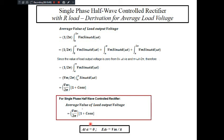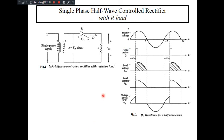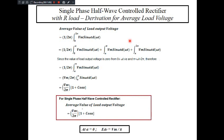Now let us see how the average load voltage varies with phase angle. At alpha equal to 0, cos(0) = 1, so 1 + 1 = 2. The 2 in the numerator and 2π in the denominator simplify, giving average load output voltage as Vm/π. This formula is widely used in solving problems for single phase half wave controlled rectifier with R load. For average load current, simply divide average load voltage by R: IDC = (Em/π)(1 + cos α) / R. Note that notations may vary in different textbooks.